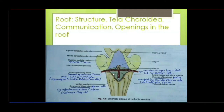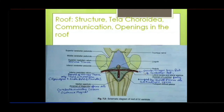The fourth ventricle has an intermediate portion that extends beyond the rhomboid fossa as lateral recesses on both sides. CSF exits through lateral apertures — L for lateral, L for Lushka's — these are called the foramina of Luschka. The foramen of Luschka is partly occupied by the choroid plexus, which protrudes out into the subarachnoid space through the lateral recess.